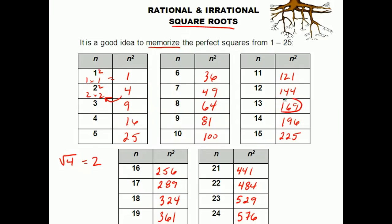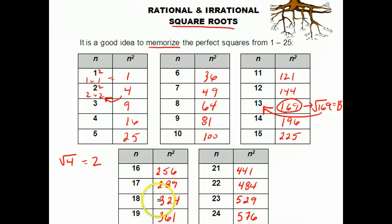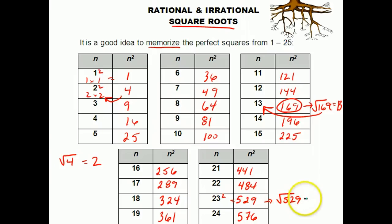For example, if I go to 169 and I try and take the square root of 169, it's going to take me back to 13. Let's do another one. 529 — if I take the square root of 529, well, 23 squared gave me 529. So when I go and undo that with my square root sign, it's going to land me back at 23.